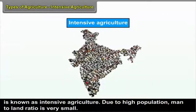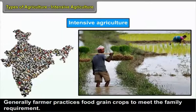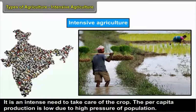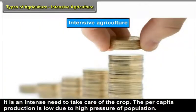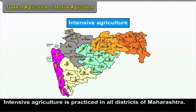Due to high population, the man-to-land ratio is very small. Generally, farmers practice food grain crops to meet family requirements, and it is intensely necessary to take care of the crop. The per capita production is low due to high pressure of population. Food grains are generally cultivated but vegetables are also grown. Intensive agriculture is practiced in all districts of Maharashtra.